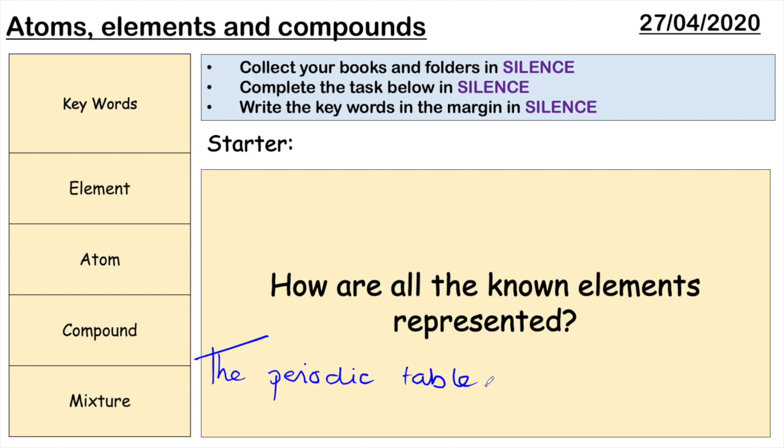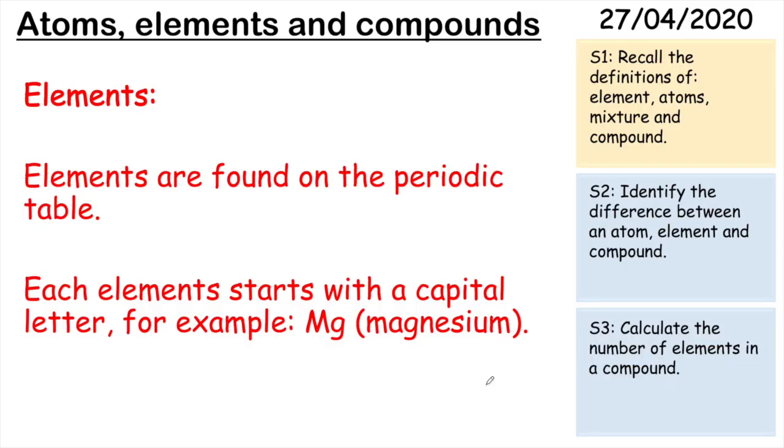Now when you look at the periodic table you'll see that every single element starts with a capital letter. This is how I know that you have a unique element. For example if you look at the bottom here you've got MG which stands for magnesium. Now this MG only has one capital letter, the M. So I know that that's one element. If I was doing another one, for example sodium, sodium is made up of two letters but only one is a capital. So that means that that is an element, one element.